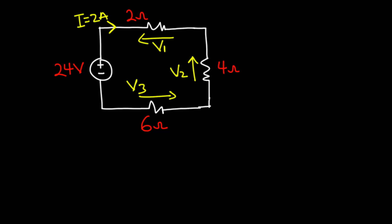In this example we have a 24 volts battery driving a current of 2 amperes through the entire circuit. We also have 3 resistors: the 2 ohms resistor, the 4 ohms resistor, and the 6 ohms resistor, all connected in series. Current will always move from a higher potential to a lower potential, and whenever current moves from a higher potential to a lower potential it results in a voltage drop. So as current flows through each resistor, there is a voltage drop across it.